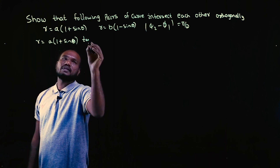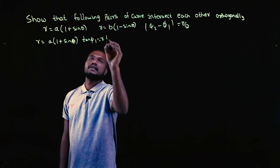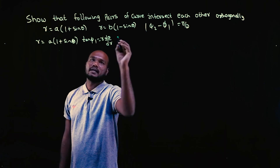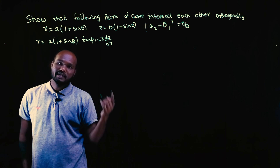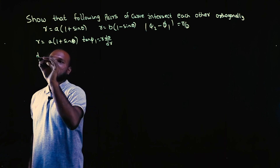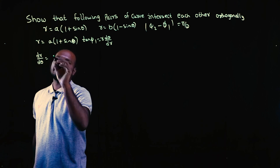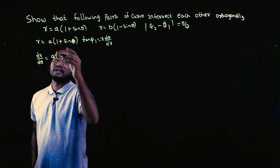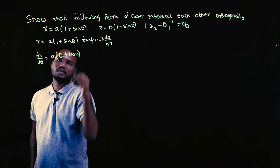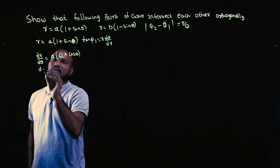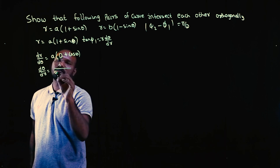What is φ₁? To find φ₁, we have to find tan φ₁, that is R into dθ/dR. So R is directly given. To find dθ/dR, we first find dR/dθ. Differentiation gives us dR/dθ equal to A times cosθ — since 1 differentiates to 0 and sinθ differentiates to cosθ. But we don't want dR/dθ, we need dθ/dR, which is the reciprocal.